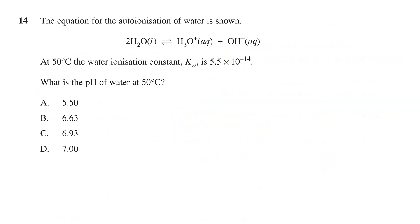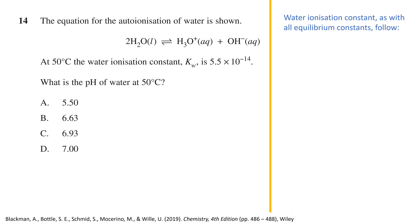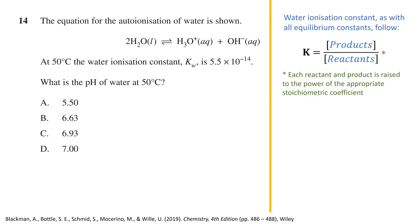Question 14 states: the equation for the auto-ionization of water is shown. At 50 degrees Celsius, the water ionization constant Kw is 5.5 × 10⁻¹⁴. What is the pH of water at 50 degrees Celsius? The options are 5.50, 6.63, 6.93, and 7.00. The water ionization constant, like all equilibrium constants, is expressed as K equals the concentration of products multiplied together divided by the concentration of reactants multiplied together, with each raised to the power of its stoichiometric coefficient.